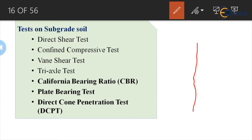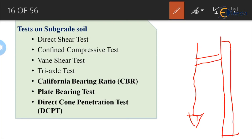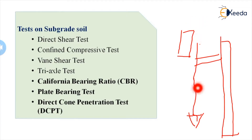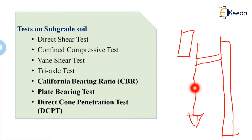The direct cone penetration test, as the name suggests, has a cone at the bottom with a 60-degree angle. A stand and a rammer (or hammer) is used; the rammer is driven onto the rod, causing the cone to penetrate the soil. The hammer weighs 8 kg and falls from a height of about half a meter. Penetration in mm per blow is measured and a graph of number of blows versus penetration is plotted to classify the soil quality.